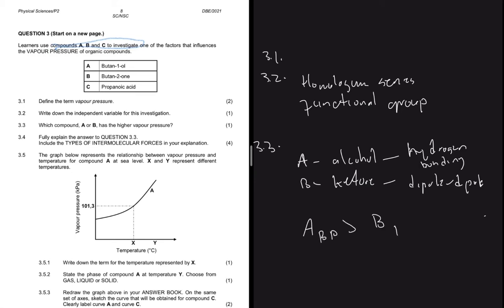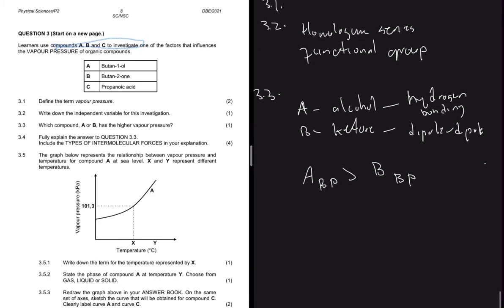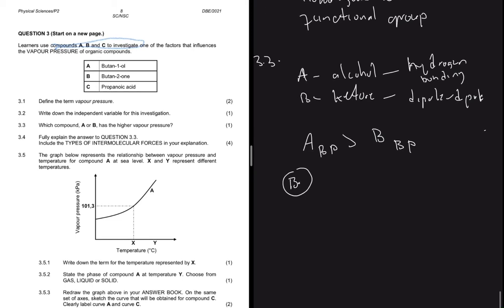Because hydrogen bonding is stronger, compound A has a higher boiling point compared to B — it is harder to overcome the intermolecular forces in A. The question asks which compound has a higher vapor pressure. Since A has the higher boiling point, it has the lower vapor pressure. Therefore, compound B has the higher vapor pressure because its boiling point is lower than that of compound A.